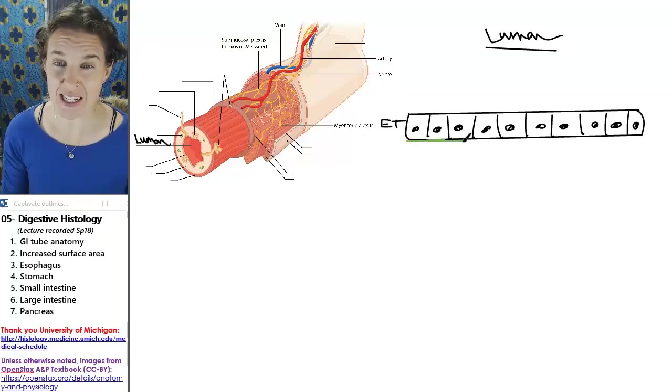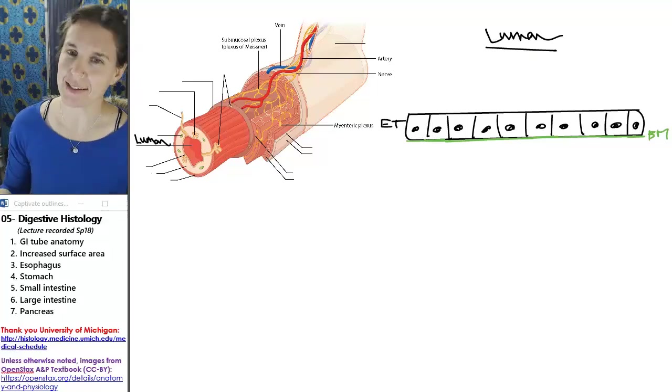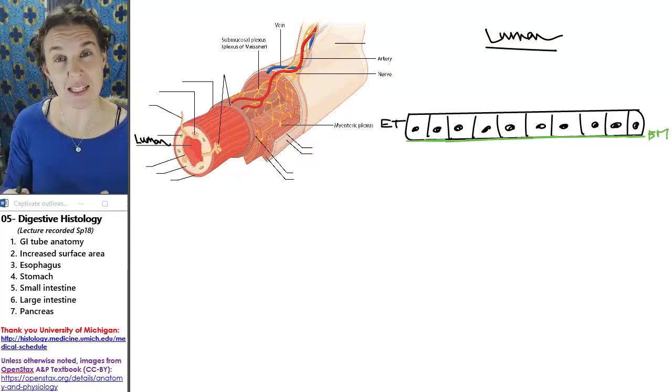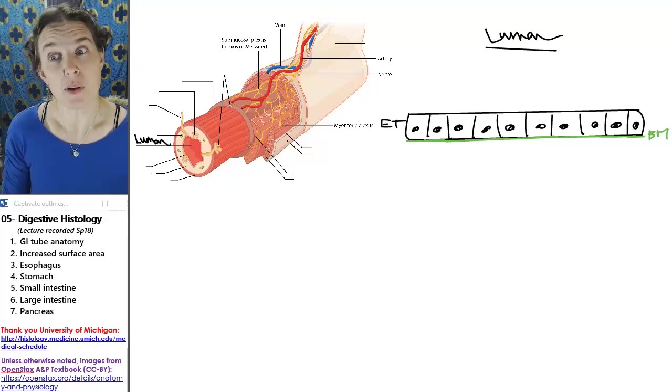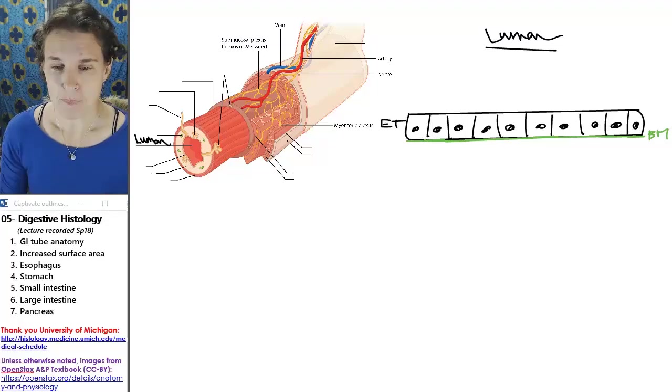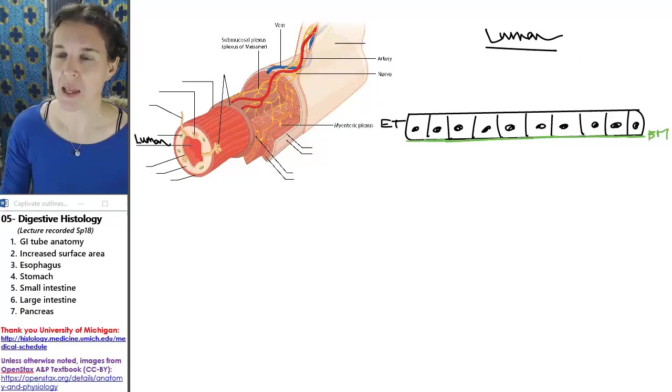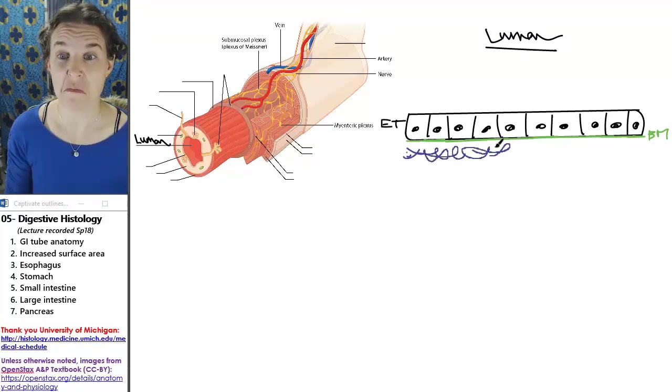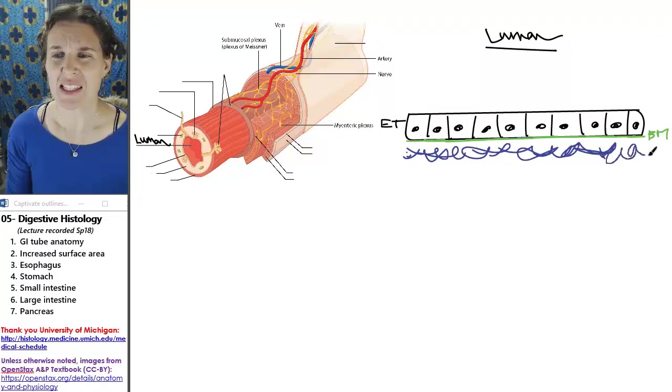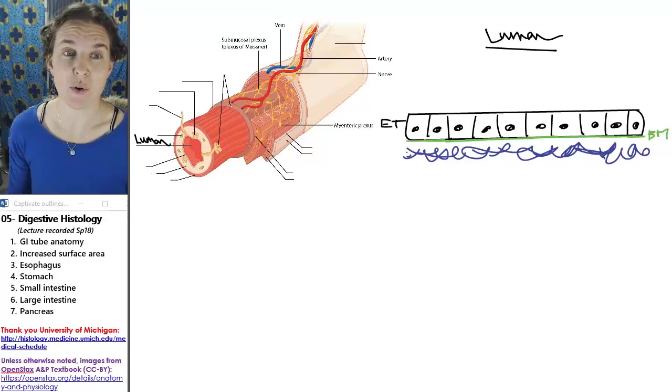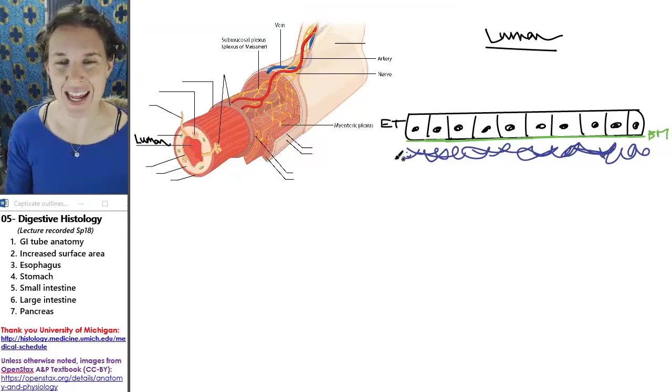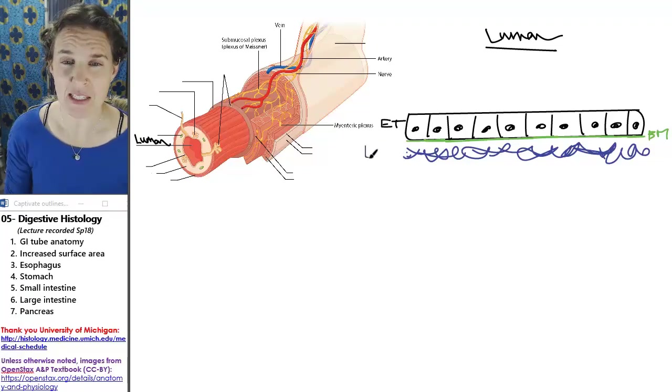I'm going to make a structure next that looks a little something like that. What is that structure? Shout it out loud and proud. That would be the basement membrane. You know that the epithelial tissue is connected to connective tissue basal to the basement membrane. I'm going to make my next layer connective tissue this color. This is a layer of loose connective tissue or areolar connective tissue, and it has a name. This is the lamina propria.